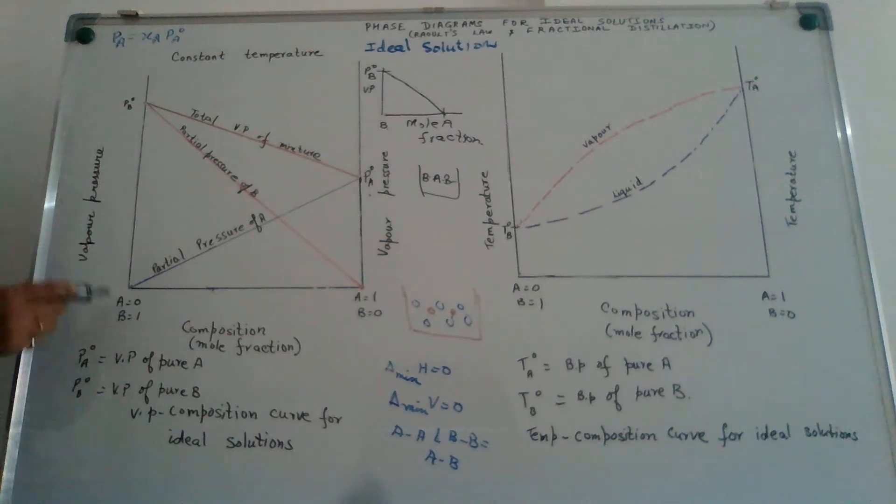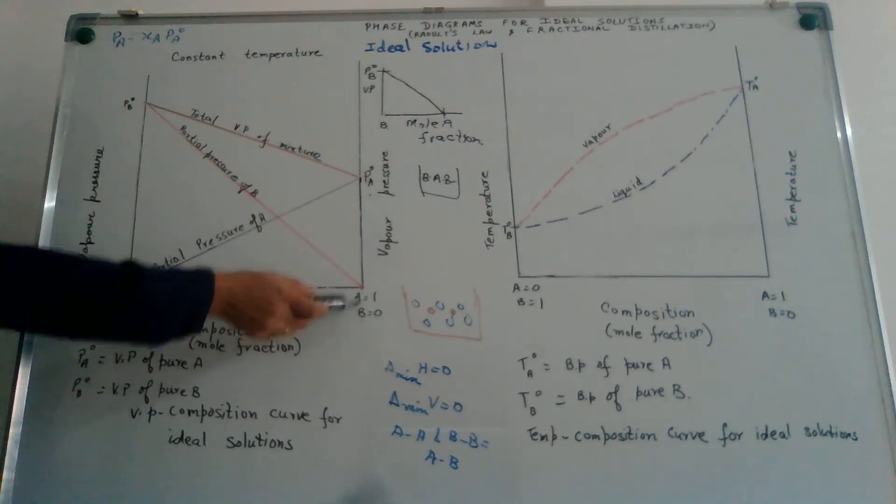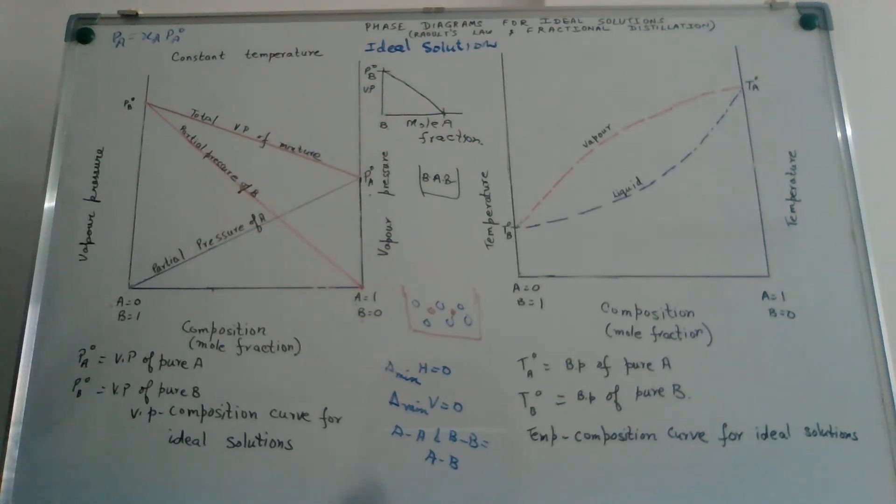Since we have plotted graph for two liquids A and B, at the first vertex A is 0, at the second vertex B is 0. This represents presence of only B. PB0 represents the vapor pressure of pure B. This represents only A in the solution and PA0 represents vapor pressure of pure A. Now we shall use this concept to determine what will be the composition of the vapor when such a liquid mixture is heated. When this is heated, a liquid which has lower vapor pressure - lower vapor pressure means it is not evaporating easily - will have a higher boiling point.